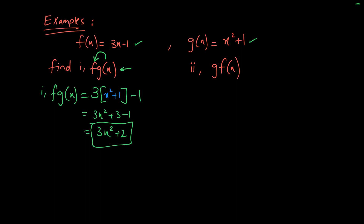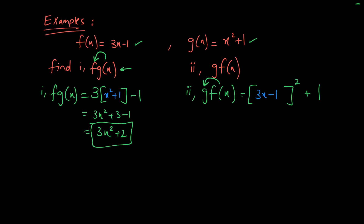Similarly, to form g∘f(x), function f is inserted into function g as the input. Function g is x² + 1, so in place of x we insert f(x) = 3x² + 1. When you simplify this, you get the result 9x² - 6x + 2 as your composite function g∘f(x).